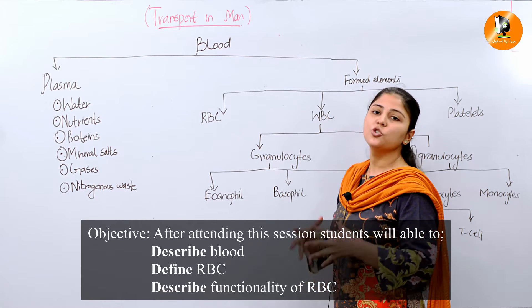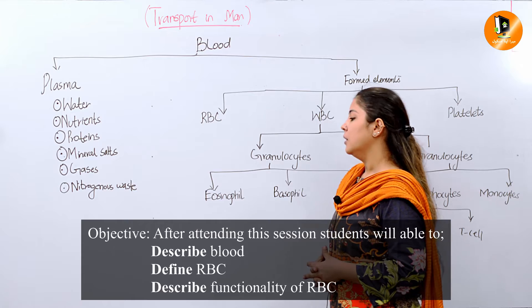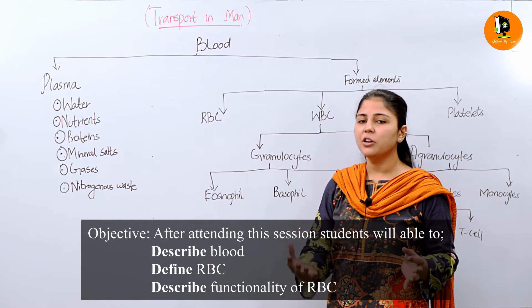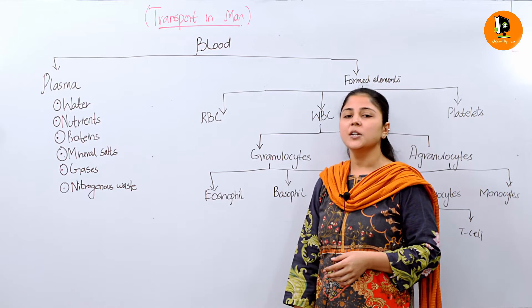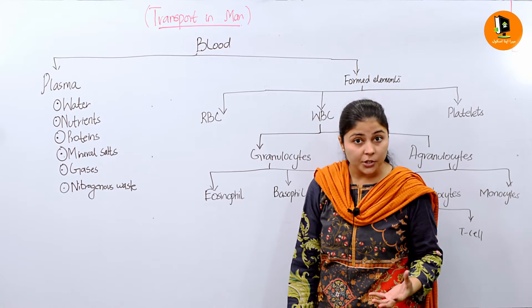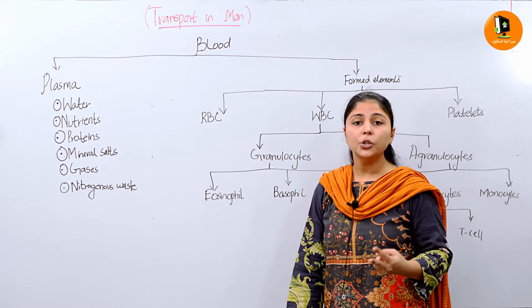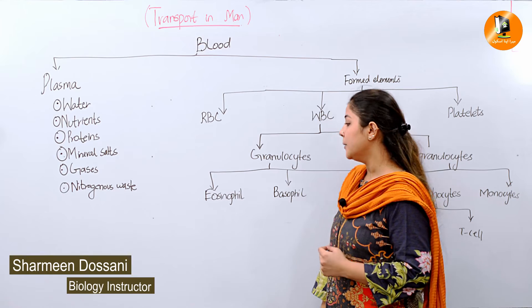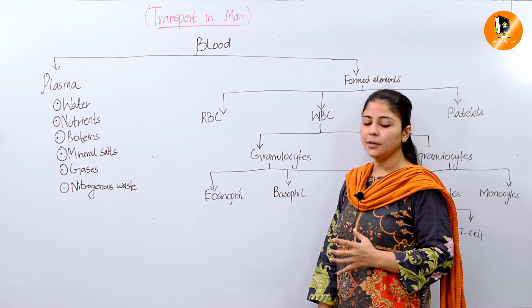I'm back with another topic, transport in man. In my last video, we discussed transport in animals in general. We discussed the circulatory system and the two types: open circulatory system and closed circulatory system.